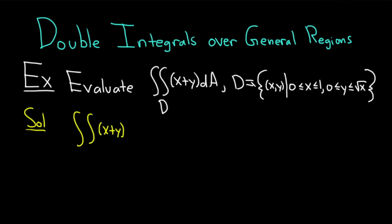Because in the set d, y includes the variable — y is between 0 and the square root of x — we want the variable term on the inner integral. So we're first going to integrate with respect to y, going from 0 to the square root of x. Then we'll integrate with respect to x from 0 to 1.